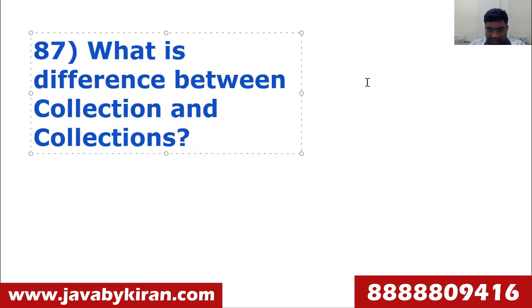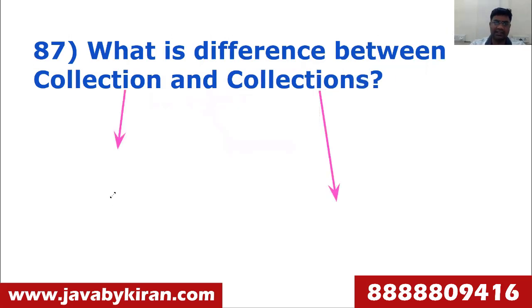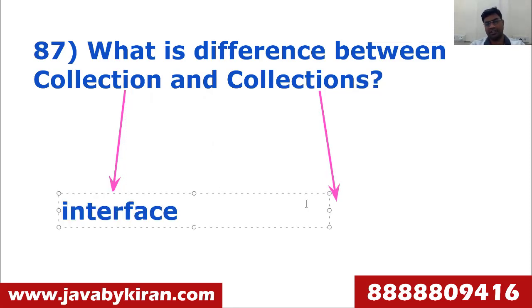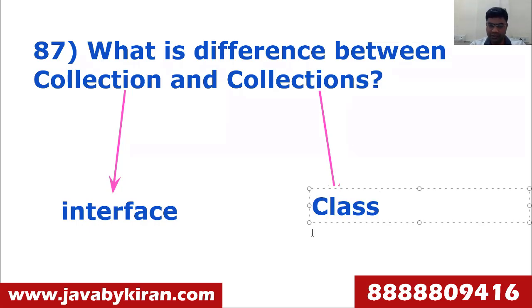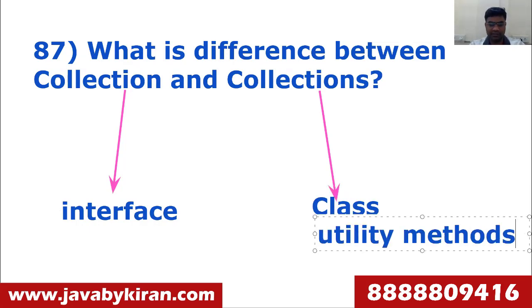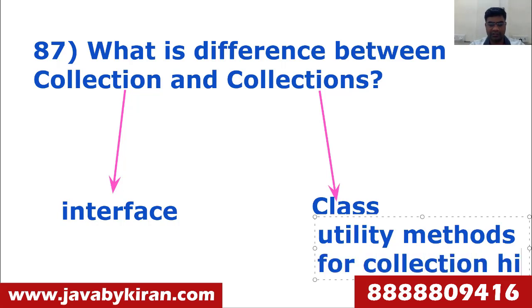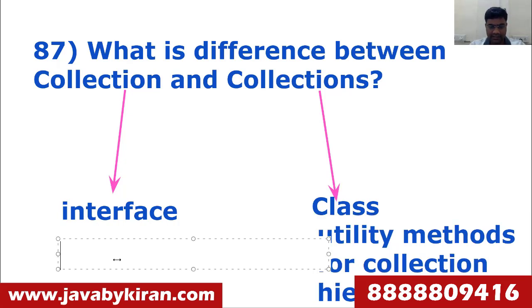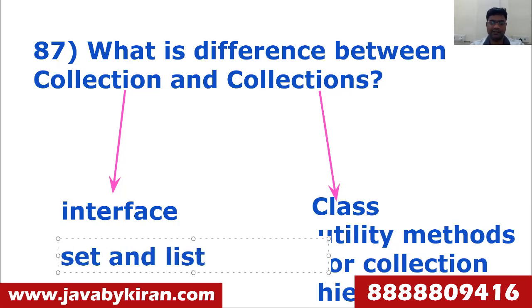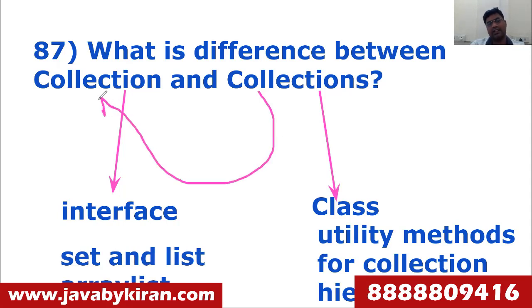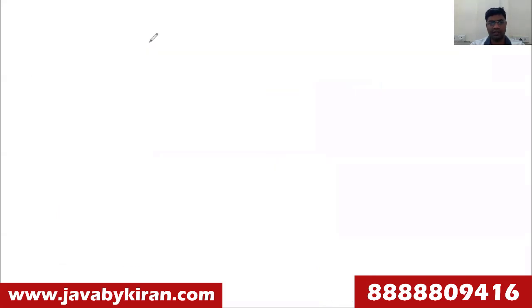What is the difference between Collection and Collections? Collection is an interface, whereas Collections is a class — that is the first key difference. Collections has utility methods for the collection hierarchy. Collection is the root interface that has Set and List under it, with many implementing classes like ArrayList.